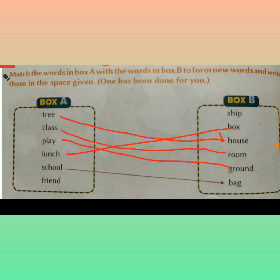Next word: friend. Only one word is left in box B — that is ship. Friendship. So let us read the words: tree house, classroom, playground, lunch box, school bag, friendship.